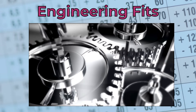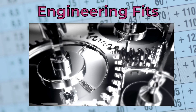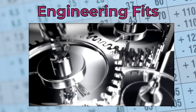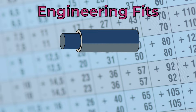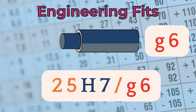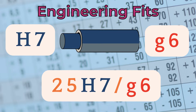Now let's talk about engineering fits. Engineering fit refers to the degree of tightness or looseness between two mating parts in an assembly. It's defined by combining a hole with a tolerance class and a shaft with a tolerance class. A fit is denoted with the basic size followed by the bore and shaft tolerance classes. For example, 25H7-G6 means an assembly of two features with a nominal size of 25 mm, where the shaft has tolerance class G6 and the hole has tolerance class H7.